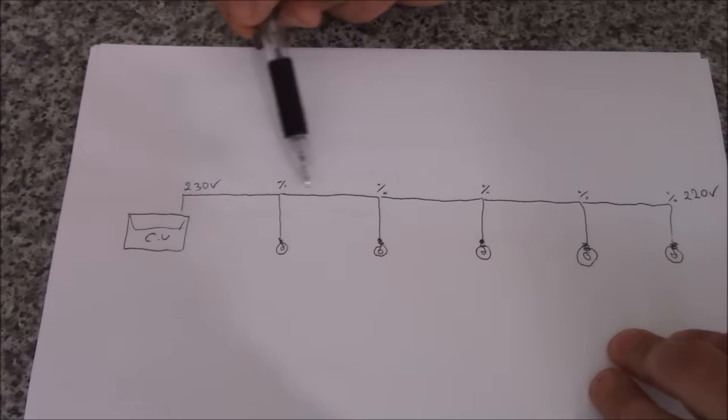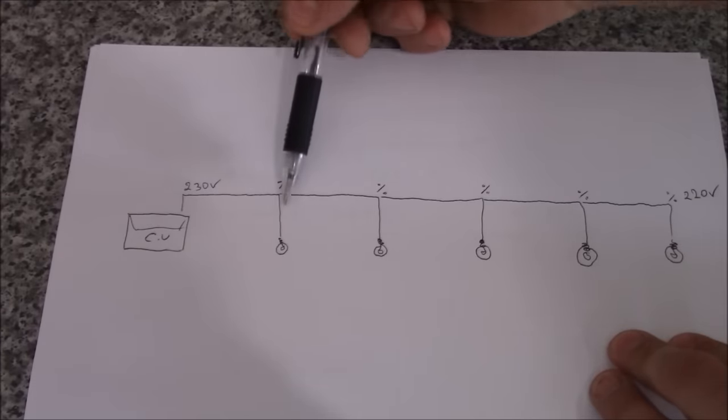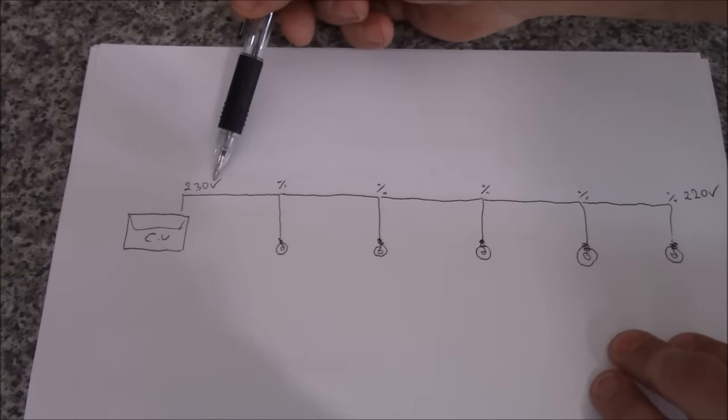So in here we've got a typical lighting circuit. Consumer unit, let's say five rooms, five light fittings with a bulb. So at every point there's some voltage loss.